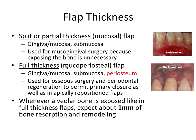The full thickness flap is called mucoperiosteal because it includes the periosteum — that thin, dense connective tissue layer that directly contacts and covers bone. We include that when we need to work on the actual bone, used for osteosurgery, periodontal regeneration, primary closure, and apically repositioned flaps. Primary closure means the edges of the soft tissue touch when sutured back together. Whenever alveolar bone is exposed, expect about one millimeter of bone resorption and remodeling.